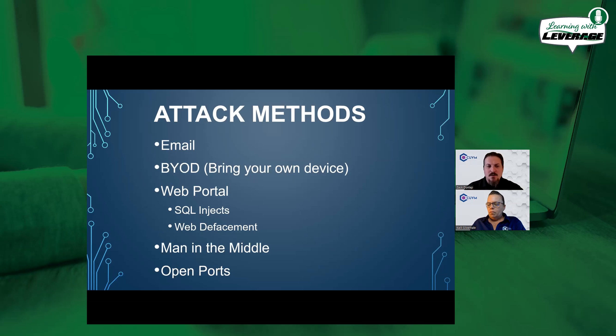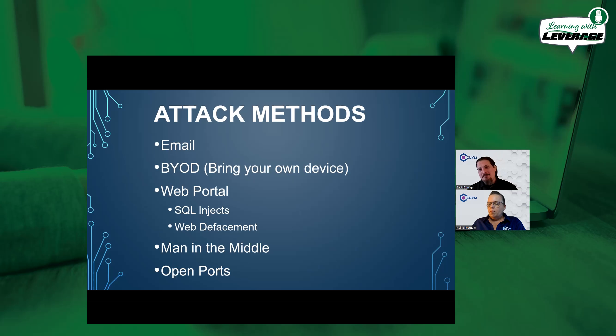Man-in-the-middle attacks — the best way to describe it: you go to a Starbucks and hop on the free wifi. While you're on that wifi, you decide to access your mobile banking account through your credit union. Somebody sitting on the other side of that network is actually monitoring that traffic, seeing you input your username and password. They're able to see and copy everything you do and mirror it, and then they have all your credentials and information.